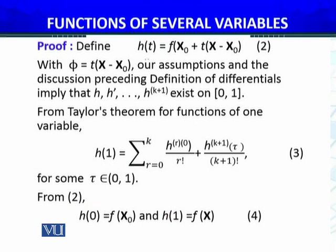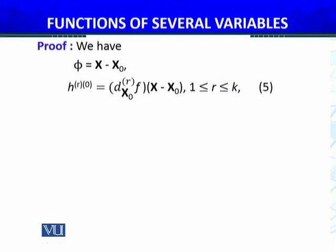From (2), h(0) = f(x_0) and h(1) = f(X). So now, what I used in the previous module - the composite function, repeatedly applying chain rule, using rth order differential. We have φ equals X - x_0. The rth derivative of h evaluated at zero equals the rth differential of f evaluated at x_0 times (X - x_0), whenever r is between one and k.